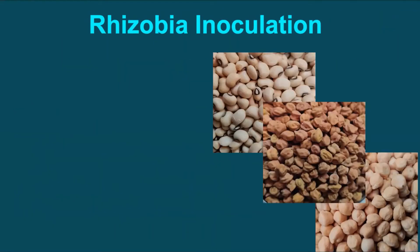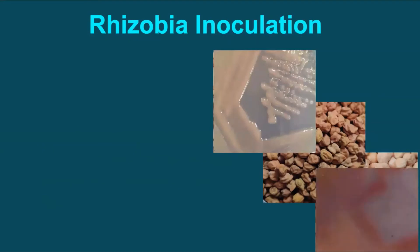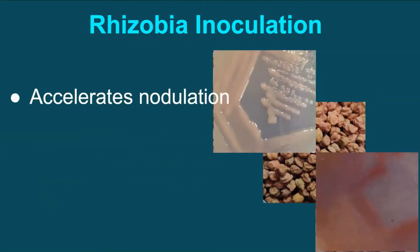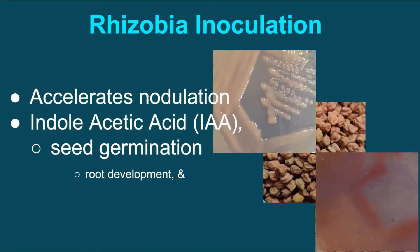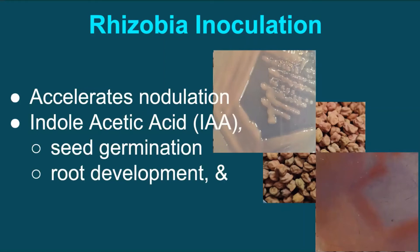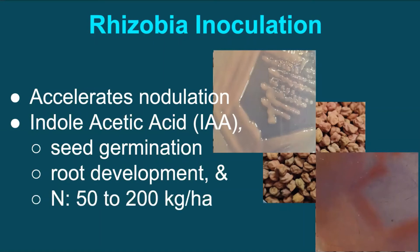Therefore, inoculation with a suitable strain of Rhizobia accelerates the process of nodulation with added advantages. The bacteria synthesize indole acetic acid, which increases root development, enhances seed germination, and helps in fixing atmospheric nitrogen varying from 50 to 200 kg per hectare.